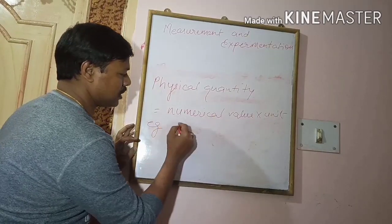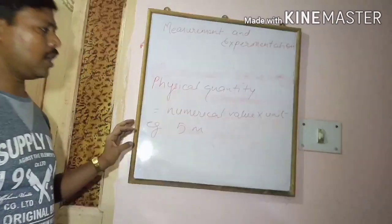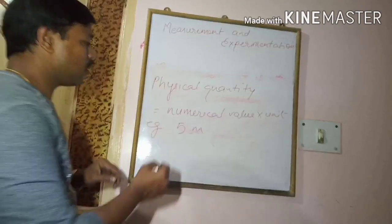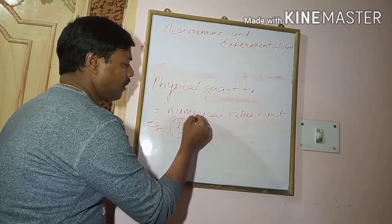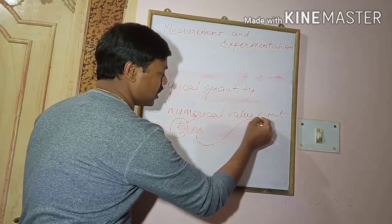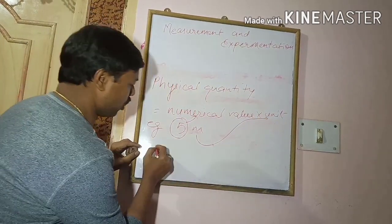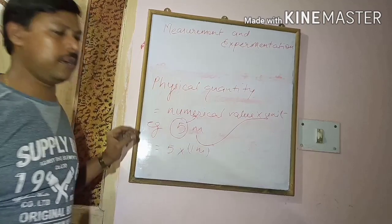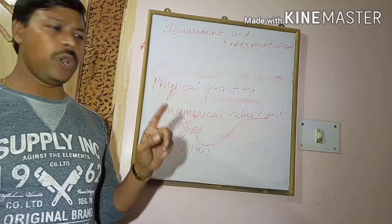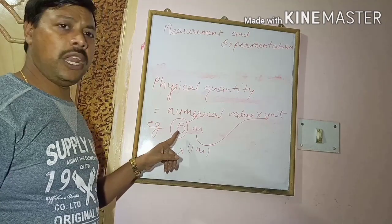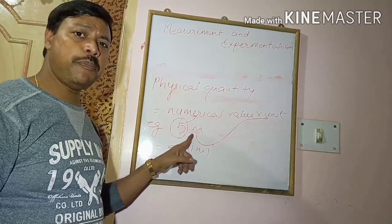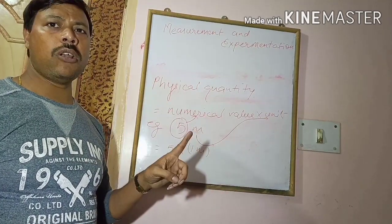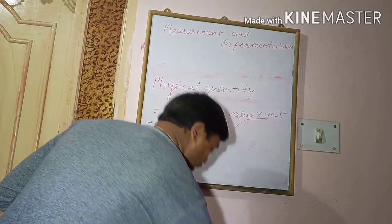For example, the length of a piece of rod is 5 meters. Here 5 is the numerical value and meter is the unit. We can also express it as 5 into 1 meter. If the length of a rod is 5 meters, it means its length is 5 times the length of that 1 meter long ruler.